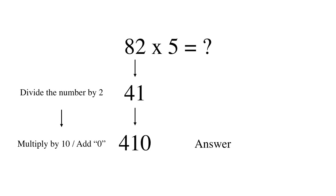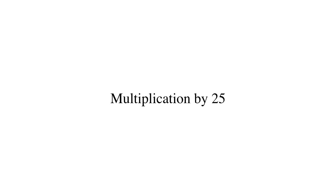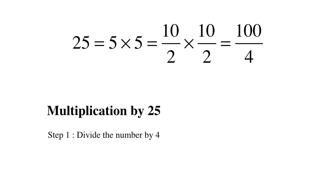Now let's move on to 25. 25 is the square of 5 and can be written as 100 upon 4, so multiplying by 25 can be viewed as multiplying by 100 and dividing by 4. Here again, we have two easy steps: one, we divide the number by 4; two, we multiply the answer by 100.